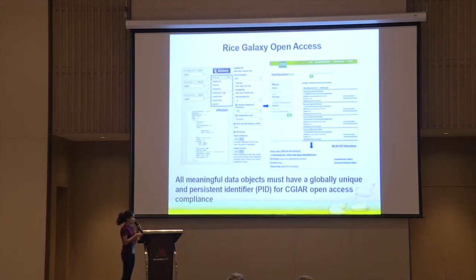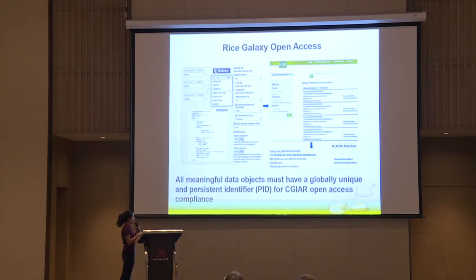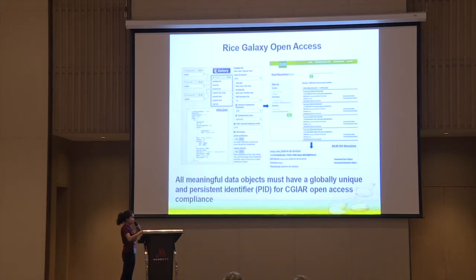We also collaborated with NIAS in Japan. There is an open access compliance we follow because we are under CGIAR. The goal is that whenever you run workflows — for instance, an association analysis using TASL — we give them persistent identifiers, which must be globally unique. We have these entries stored in MongoDB.